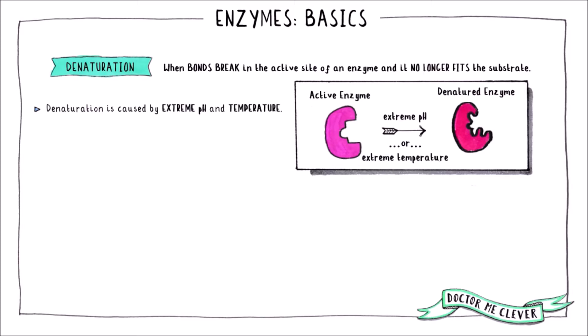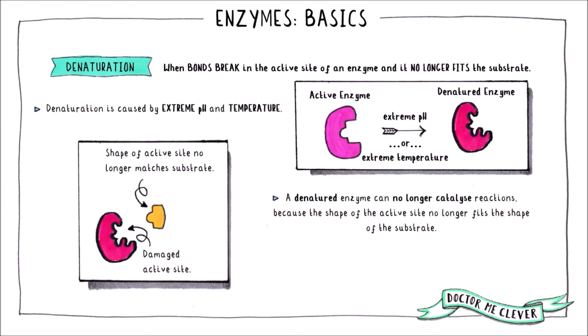Enzymes work best in optimum conditions such as the right pH and temperature. Most enzymes in the human body work best at a pH of 7 and a temperature of 37°C. But sometimes an enzyme can find itself in unfavourable conditions such as extreme pH or temperature, and it can become damaged. Bonds can break in the active site of the enzyme, meaning that it no longer fits the substrate and cannot catalyse the reaction. This process is called denaturation, and at the end point the enzyme is said to be denatured.